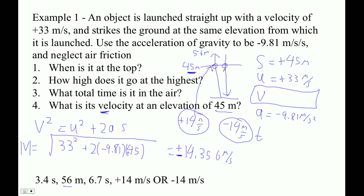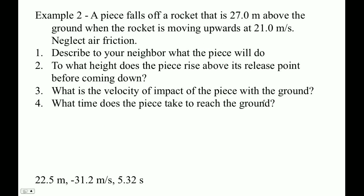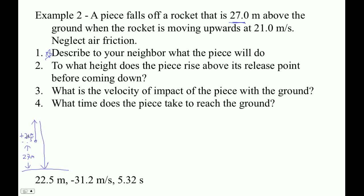Let's do another example. Example 2: A piece falls off a rocket 27 meters above the ground and the rocket is moving up. Here's the ground — let's draw a picture. The rocket is moving up and it's 27 meters up. The piece is actually going to go up and then come all the way down and hit the ground. So this is a case where it won't spend half the time going up — it'll spend more time going down because it starts 27 meters up and is going upward at plus 21 meters per second. It'll go up, reach zero velocity, then come back down and hit the ground going faster than 21 meters per second.